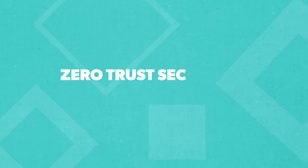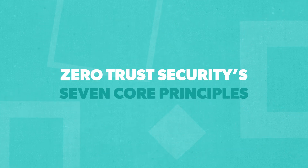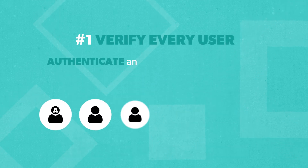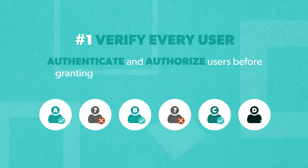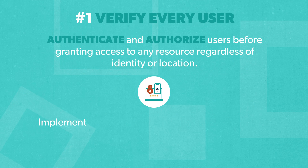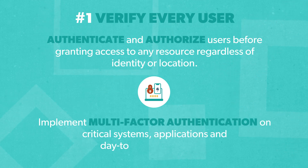Now let's take a closer look at Zero Trust security's seven core principles. One: verify every user. Authenticate and authorize users before granting access to any resource, regardless of identity or location. Implement multi-factor authentication on critical systems, applications, and day-to-day workstations.